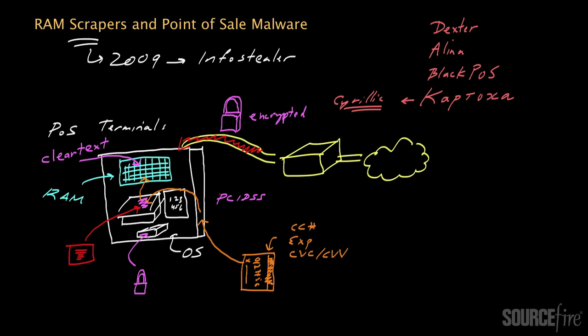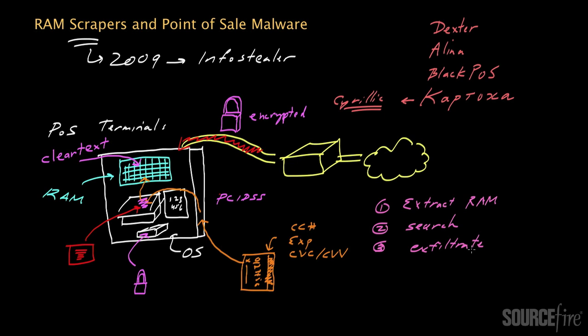There are, loosely speaking, about three parts of the operation. First, the RAM scraper has to extract the contents of the RAM in an appropriate fashion. To do this, it first identifies the processes corresponding to running software applications that might be of interest on the system.